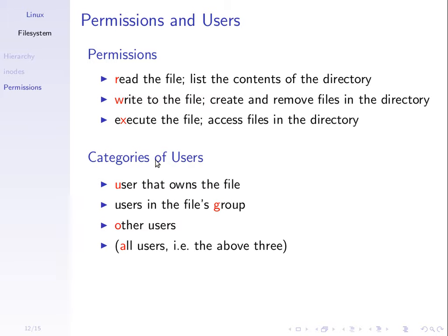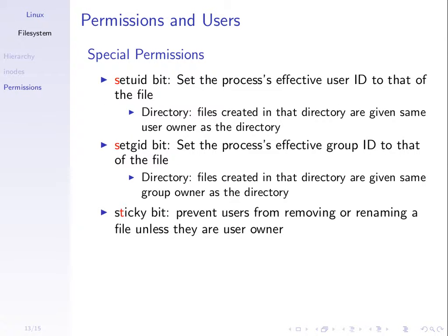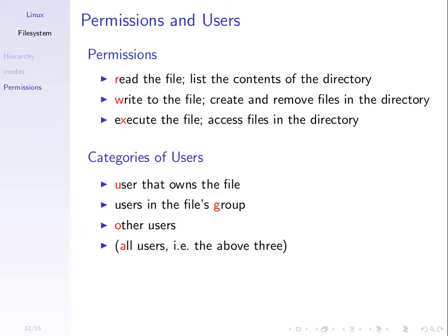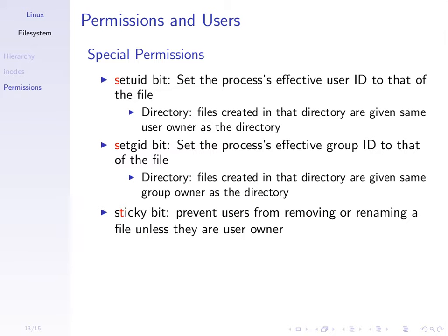We categorize users: the user that owns the file, the group that owns the file and users in that group, and then other users. There is one user that owns a file, there is a group of users for that file, and then there is the rest of the world - others. We use the letters U, G, and O to refer to them, or A for all users on the system. There are 9 bits: read, write, and execute for the user - 3 bits; read, write, and execute for the group - another 3; and read, write, and execute for others - 9 bits total. Then there are 3 special cases.